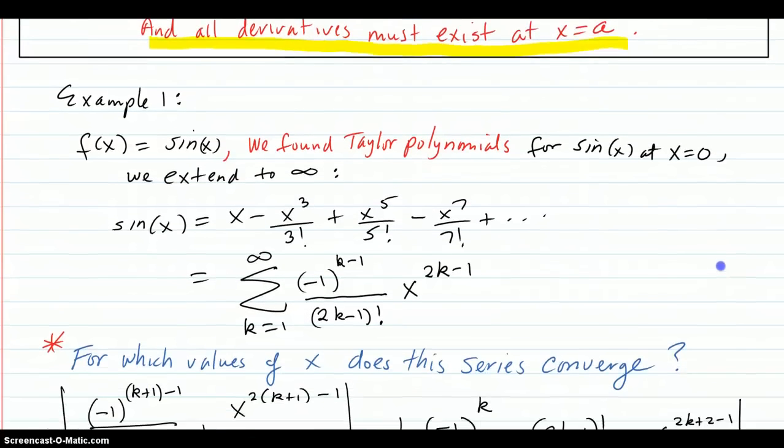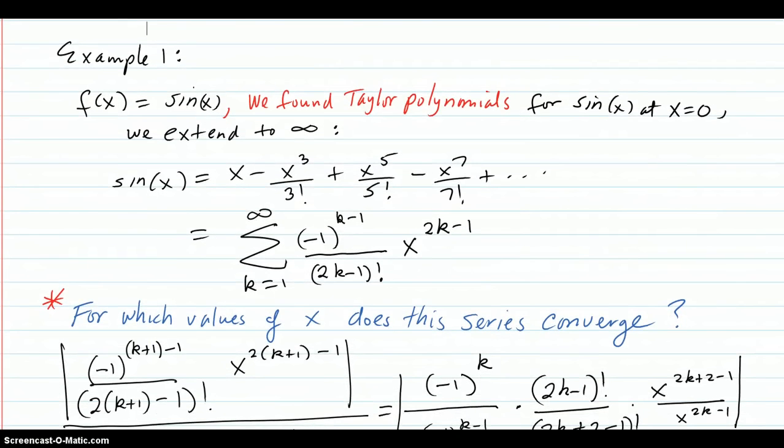Example one: For f(x) equals sine x, we found Taylor polynomials for sine x at x equals zero. And we extended that, and this was the pattern. And we just extend that to infinity and you get that series right there.